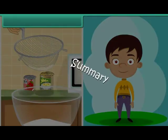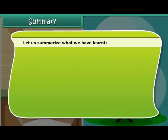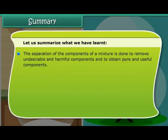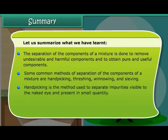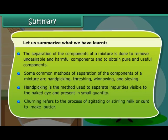Let us summarize what we have learned. The separation of the components of a mixture is done to remove undesirable and harmful components and to obtain pure and useful components. Some common methods of separation are hand-picking, threshing, winnowing and sieving. Hand-picking is the method used to separate impurities visible to the naked eye and present in small quantity. Churning refers to the process of agitating or stirring milk or curd to make butter.